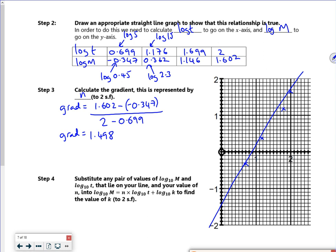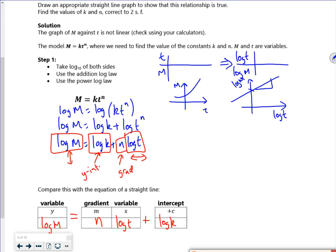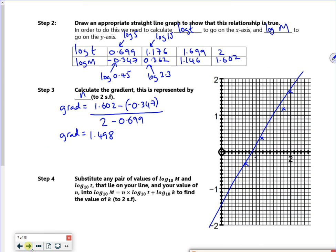Now, going back to the equation, my gradient is just the n value. So that's quite nice. I'm actually going to work it out. So n is 1.5, that's 2 significant figures. So that's brilliant. I've got what it is. I've got a constant. I don't have to do 10 to the power of that one, because it was already the value.